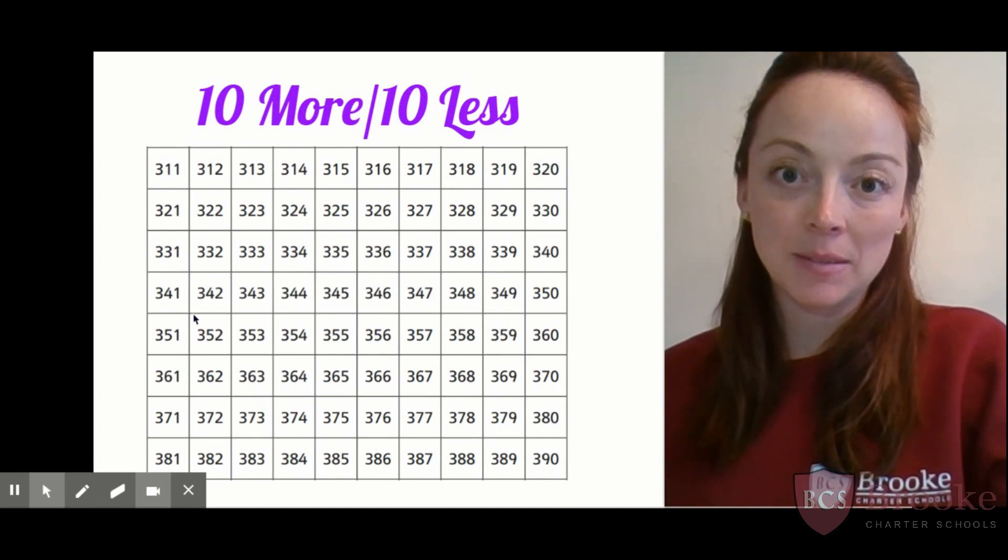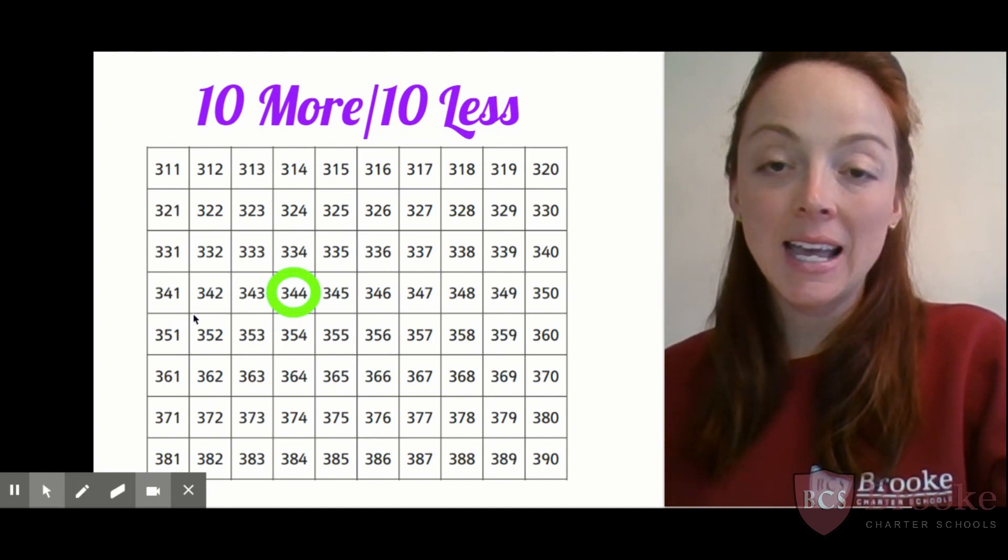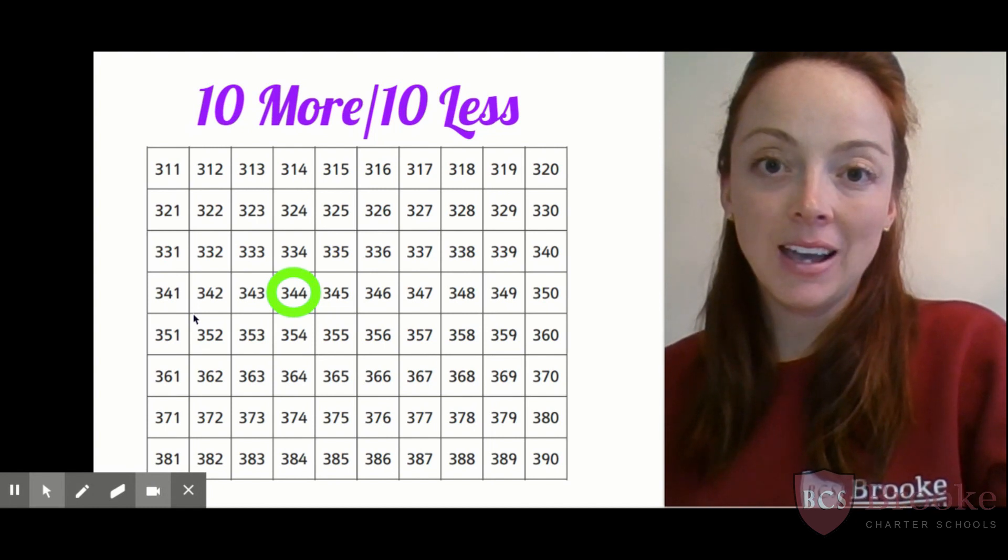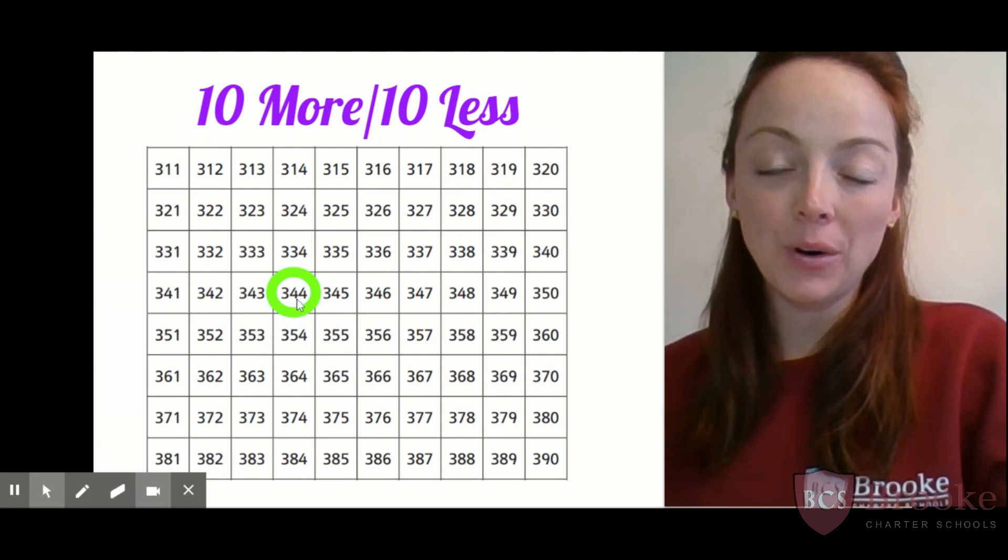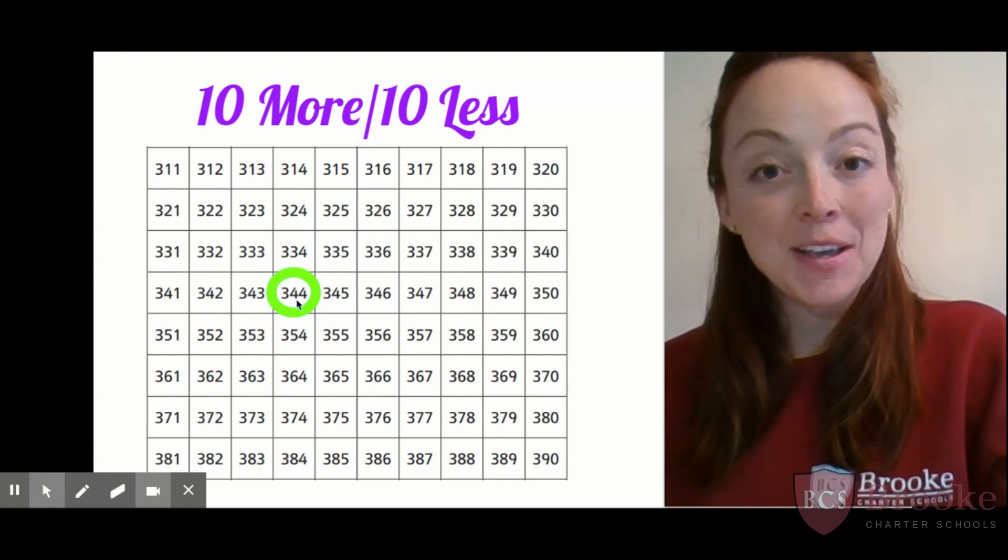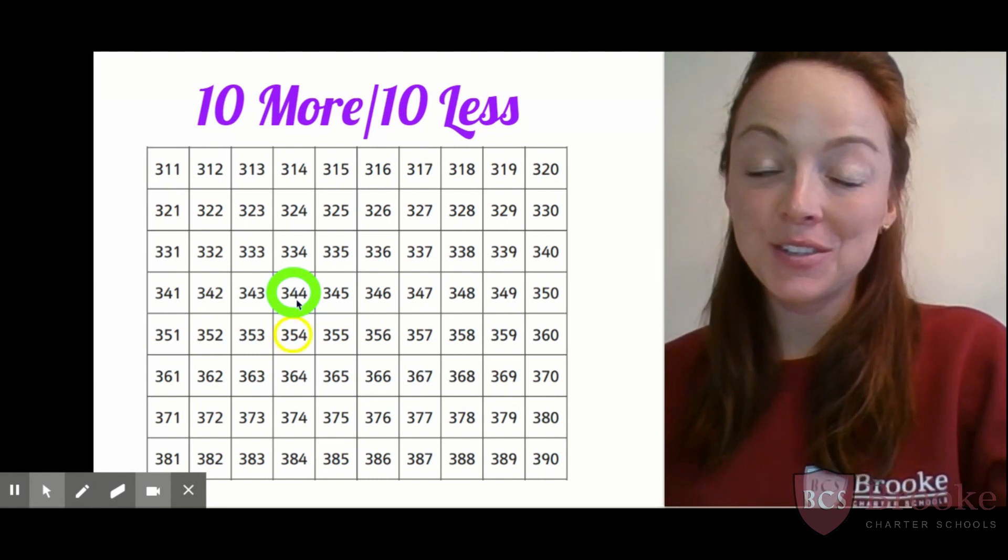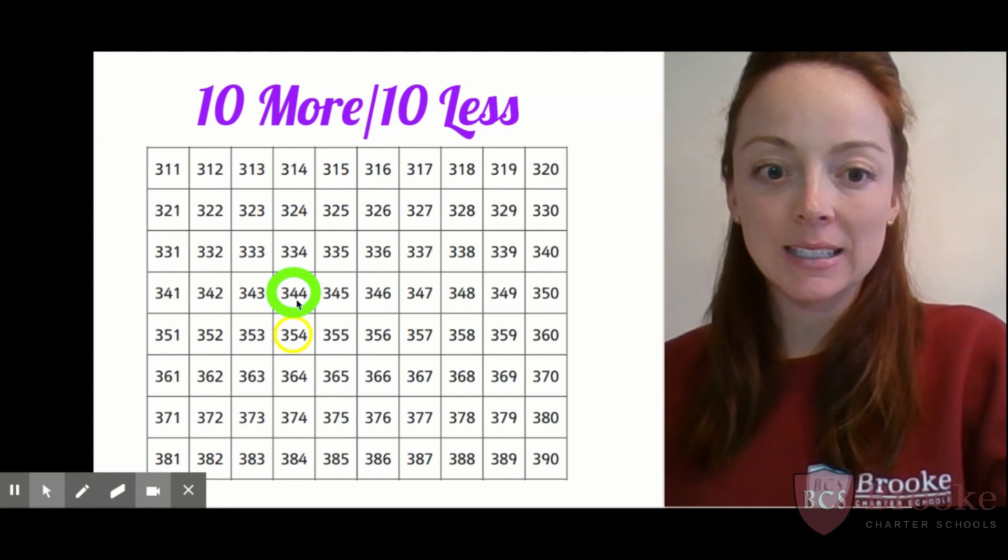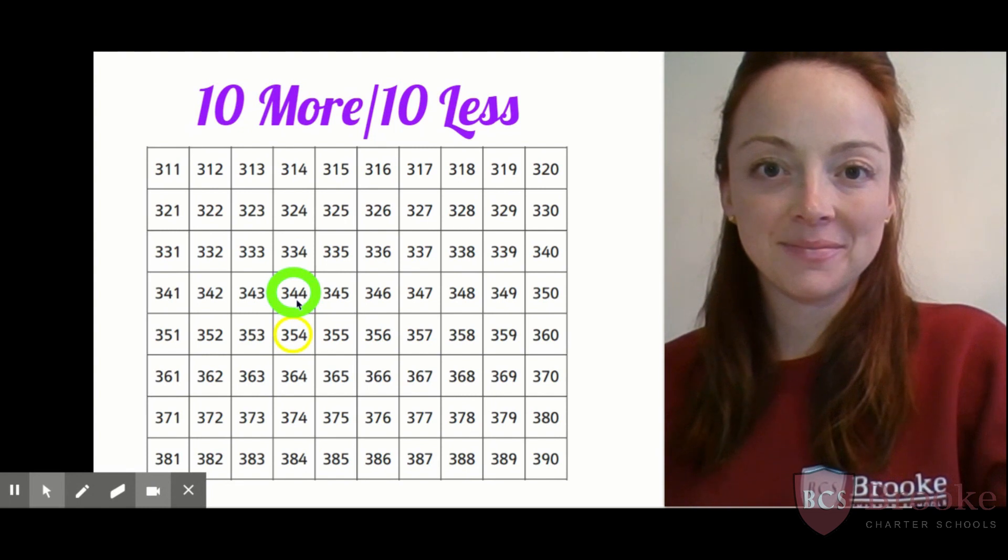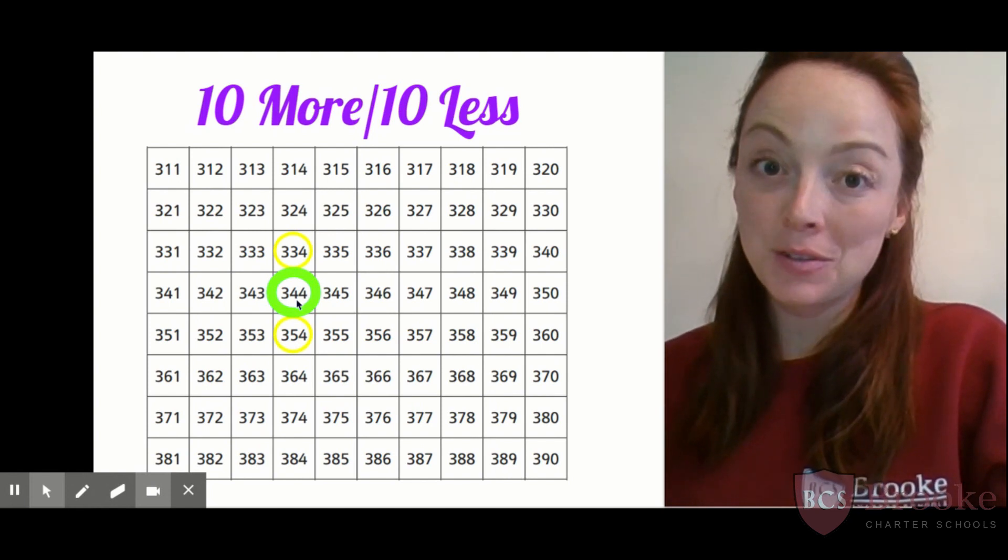Now we're going to do some quick 10 more, 10 less practice, only with bigger numbers this time. The first number we're going to use is 344. What's 10 more than 344? I know I can make a really easy move on the hundreds chart, or also just add one more 10 stick to this number. How many tens are in 344? Right, 4 sticks of 10. So if I add one more stick of 10 to 4, I get? Right, 5. 5 sticks of 10, which would make my number what? You got it, 354. Okay, what if I'm at 344 and I take away a 10 stick? Instead of 4 10 sticks, how many would I have? 3 10 sticks. Exactly. Which would be what number? Good, 334.